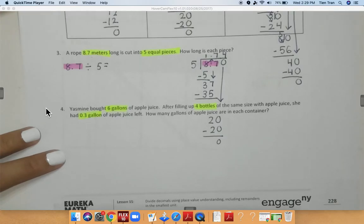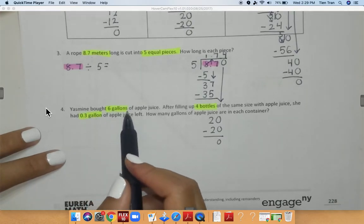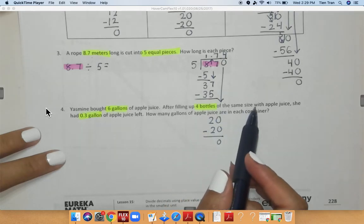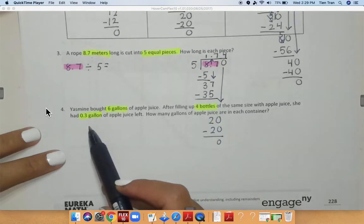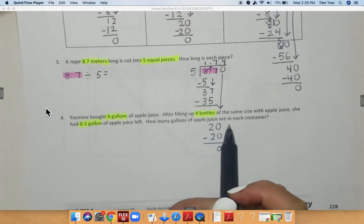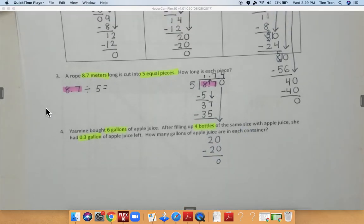Now, for problem number four, it says here, Yasmin bought six gallons of apple juice. After filling up four bottles of the same size with apple juice, she had 0.3 gallons of apple juice left. How many gallons of apple juice are in each container? So I want you to picture in your head how many apple juice bottles she has and how many gallons of apple juice that she needs to make sure she has.